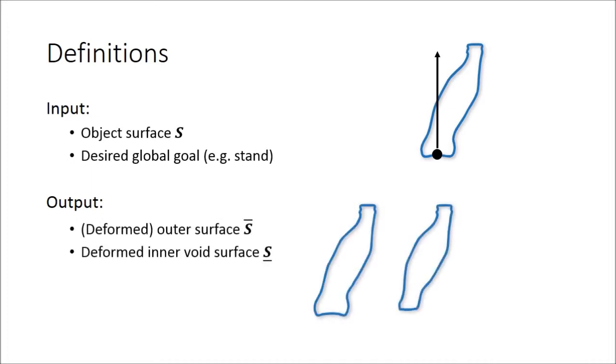As output, we deliver two surfaces. One is the outer surface, which will be visible. The second is the inner surface, which is the inner wall of the enclosed void. The volume between these two surfaces constitutes the final solid body that fulfills the desired goal.